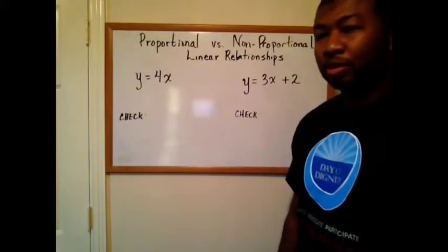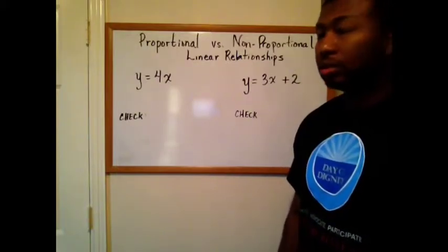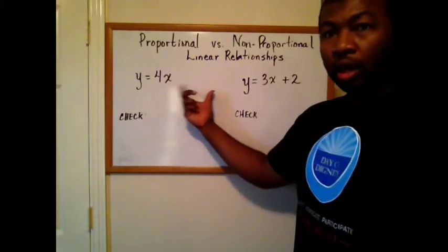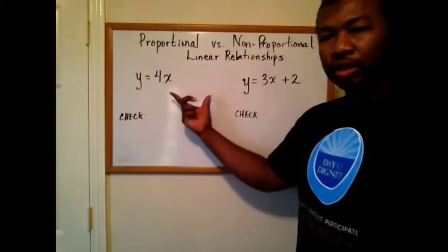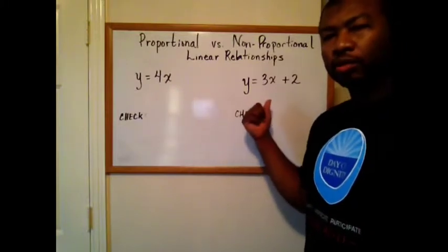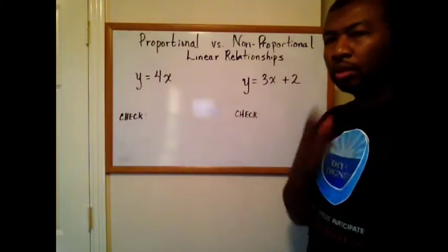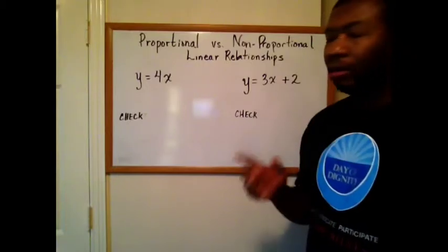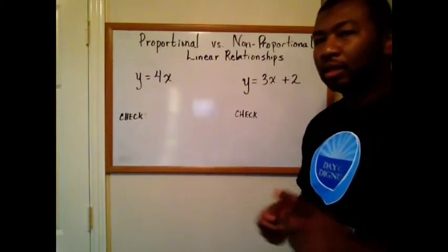Proportional versus non-proportional linear relationships. Part two. So here I have two equations of lines. Two linear equations. Y equals 4x and y equals 3x plus 2. How do I know if they're proportional or not? I don't know any points on the line. Or do I?